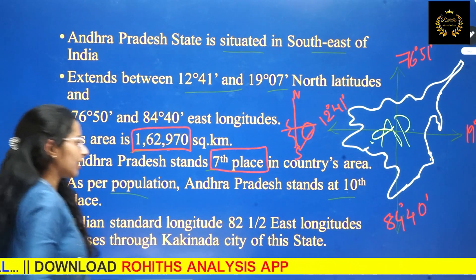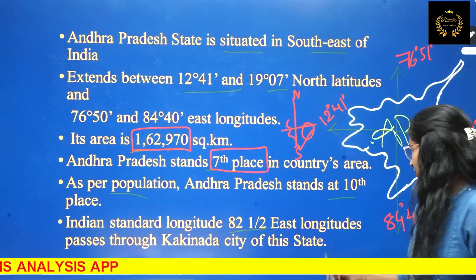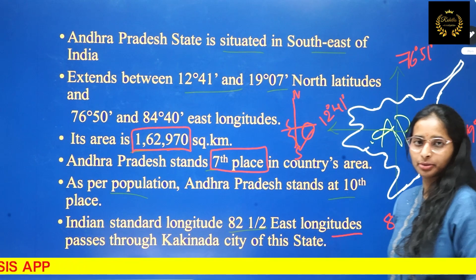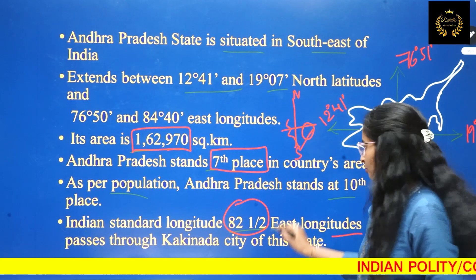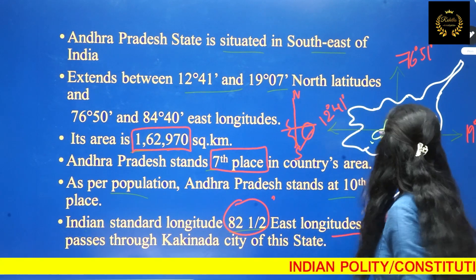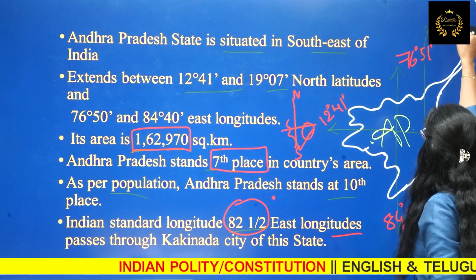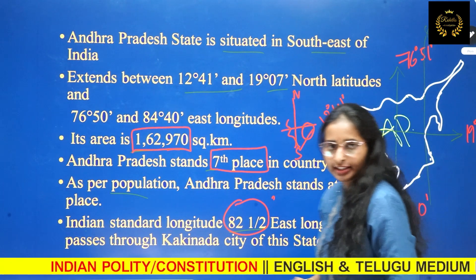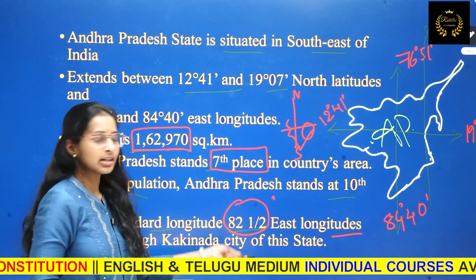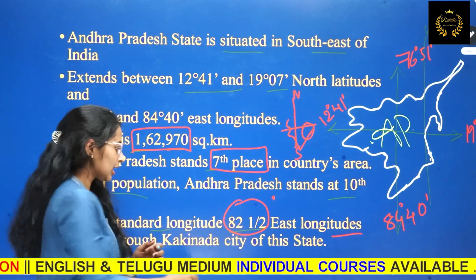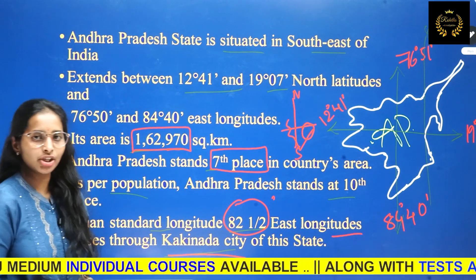The Indian standard longitude is 82 and a half degrees eastern longitude. This passes through four states in India. One of those states is Andhra Pradesh — specifically, the 82.5° eastern longitude passes through Kakinada city in Andhra Pradesh.